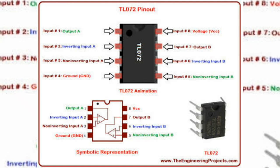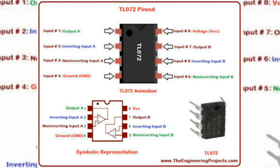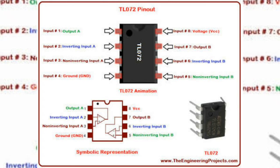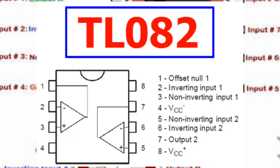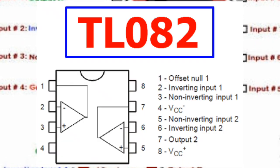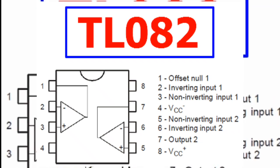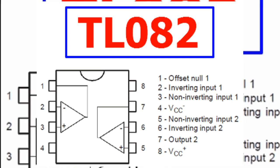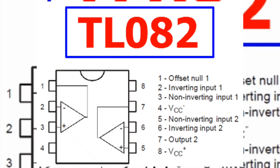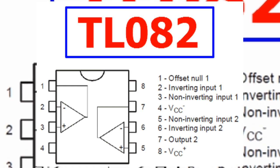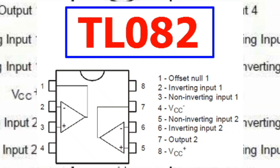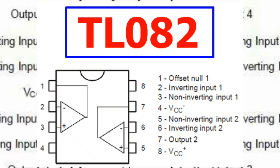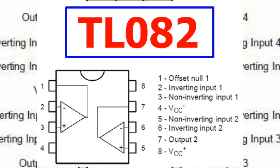We have the IC output and input. Now compare the IC — this is the TLO72 and 4558. You can see the pin and output in this image.